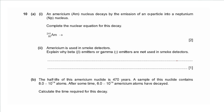Question 10ai: an americium nucleus decays by emission of an alpha particle into a neptunium nucleus. Complete the nuclear equation. The alpha particle has nucleon number 4 and proton number 2. Neptunium's nucleon number is 241 − 4 = 237, and its proton number is 95 − 2 = 93.